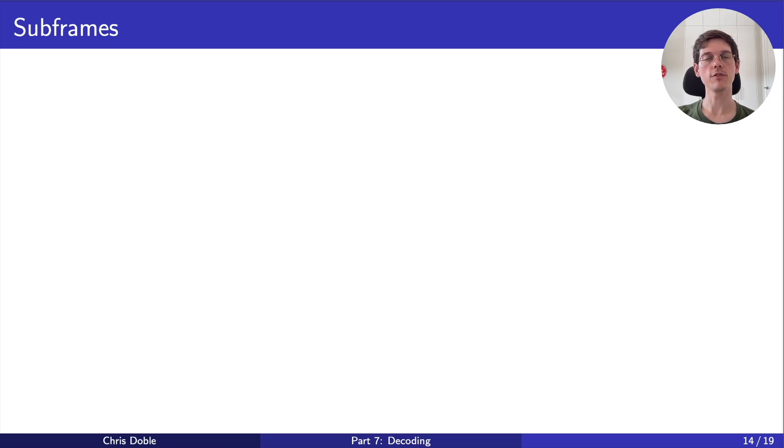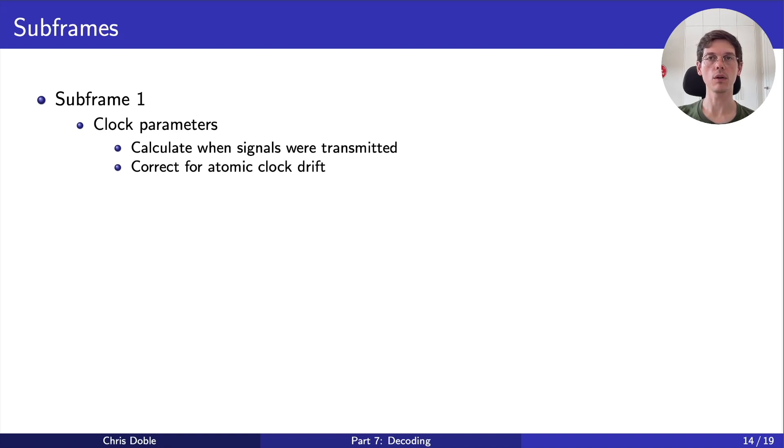Now that we have a way to tell what kind of subframe we're dealing with, let's talk about the five possibilities. Subframe 1 primarily contains the satellite's clock parameters. These are used to calculate the time at which signals were transmitted, and to correct for things like drift of the satellite's atomic clock. It also contains information about the satellite's health. An unhealthy satellite isn't working in one way or another, and shouldn't be used in calculations.